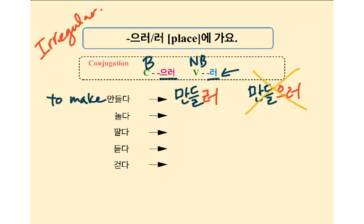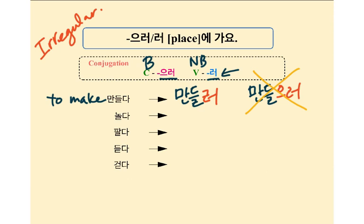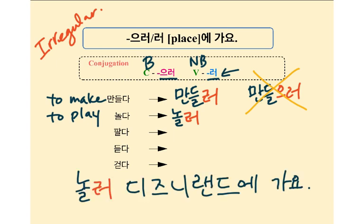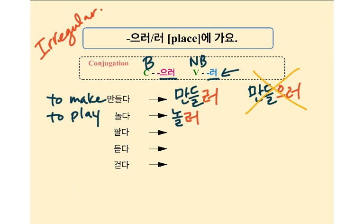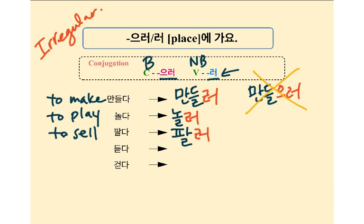친구하고 김밥을 만들러 친구 집에 가요. I go to my friend's house in order to make 김밥 with my friend. 놀다 means 'to play' — 놀러. 놀러 디즈니랜드에 가요. 팔다 means 'to sell' — 팔러. 컴퓨터를 팔러 place에 가요. Now you have ㄷ 받침 before 다.